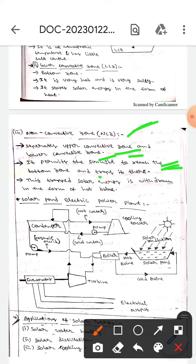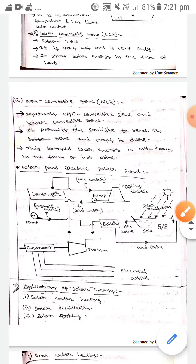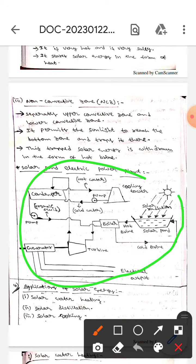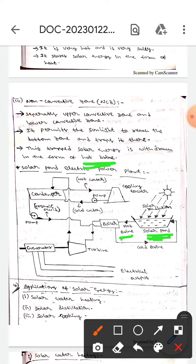And also this trapped solar energy is withdrawn in the form of hot brine. If you observe here, this diagram represents the solar pond electric power plant. Here in the solar pond, as we told, here the hot brine, this is the hot brine.